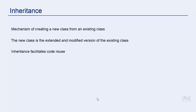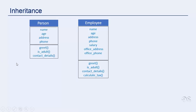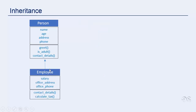Let us understand this with the help of an example. You want to create employee objects which should have certain methods and data members. Now suppose you already have a person class that has most of the functionality that you need for an employee class. You need to add just some new things and maybe change a few things. So instead of creating a brand new employee class from scratch, you can create your employee class by inheriting from the person class.